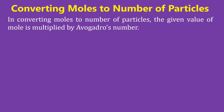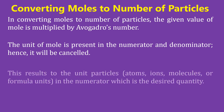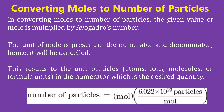In converting moles to number of particles, the given value of moles is multiplied by Avogadro's number. The unit of moles is present in the numerator and denominator and will be cancelled. This results in the unit of particles — atoms, ions, molecules, or formula units — in the numerator, which is the desired quantity. Number of particles = moles × 6.022 × 10²³ particles per mole.